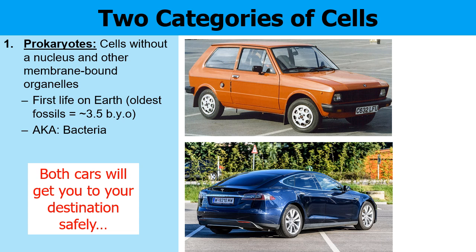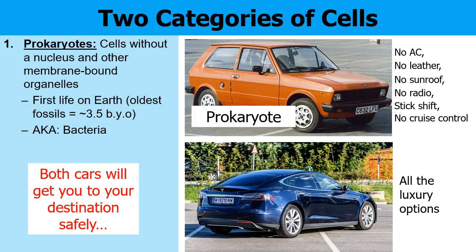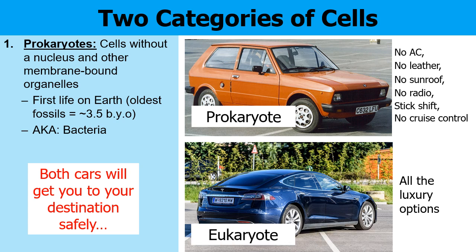Here's a fun analogy — here's two cars. They're both cars and they're both going to get you safely to your destination, but these cars are by no means equal. The car on top is very primitive: no air conditioning, no leather interior, no sunroof, no radio, it's a stick shift with no cruise control. But the car on the bottom has all the luxury options. The car on top is analogous to a prokaryote, and the car on the bottom is analogous to a eukaryote — a more complex car and a more complex cell.